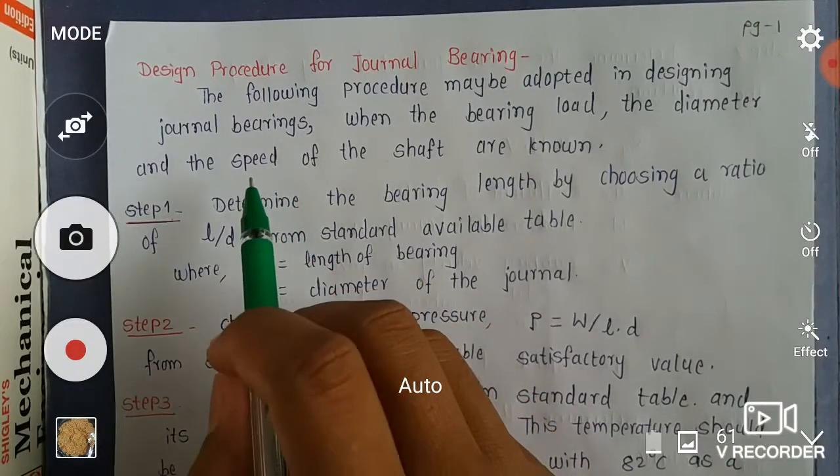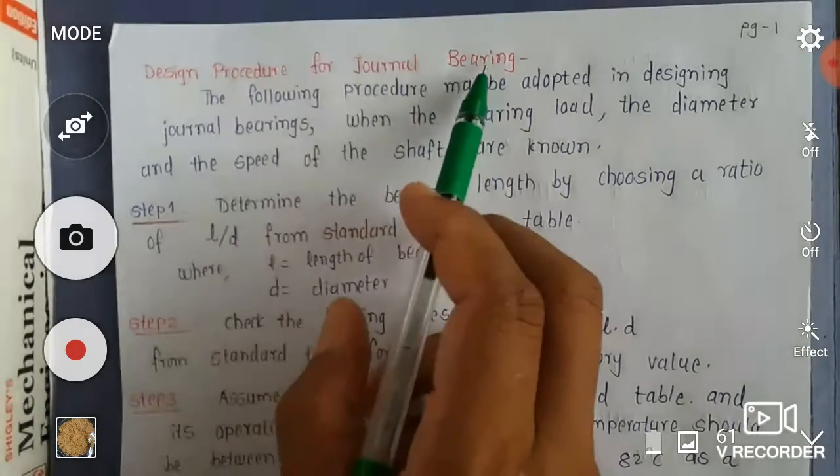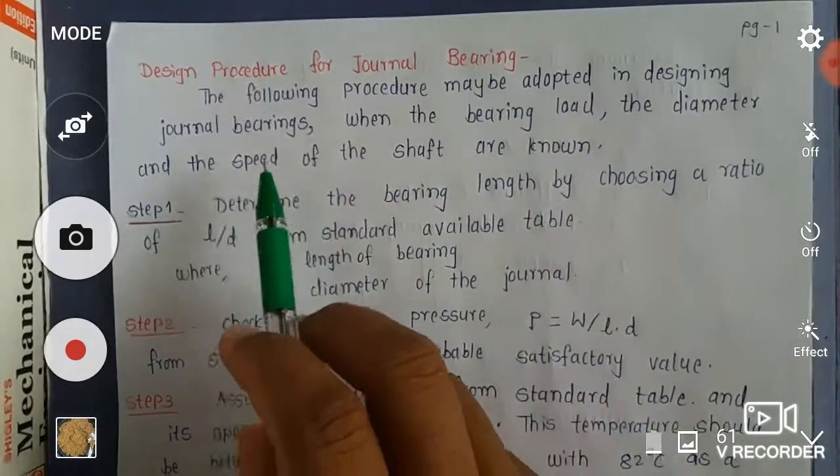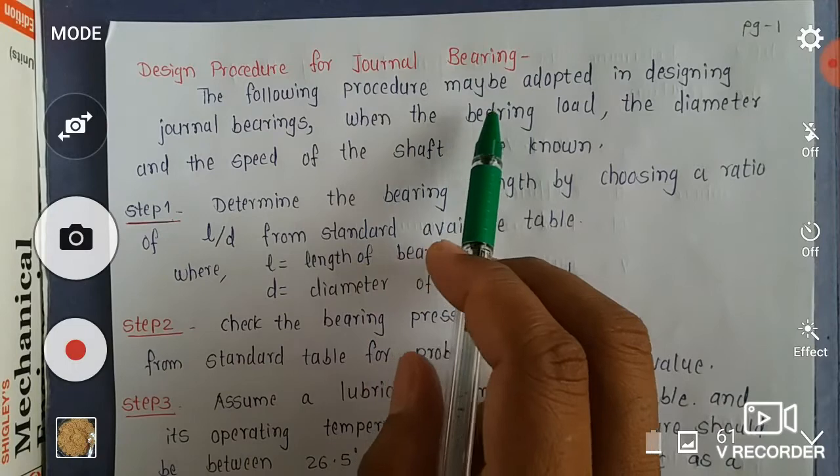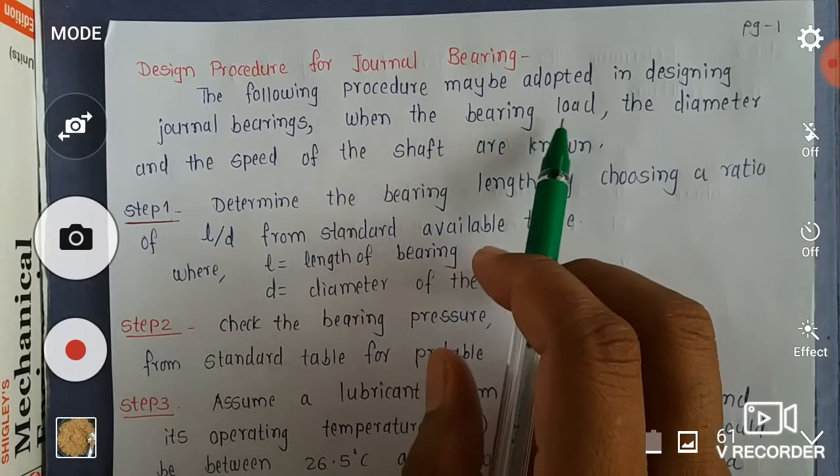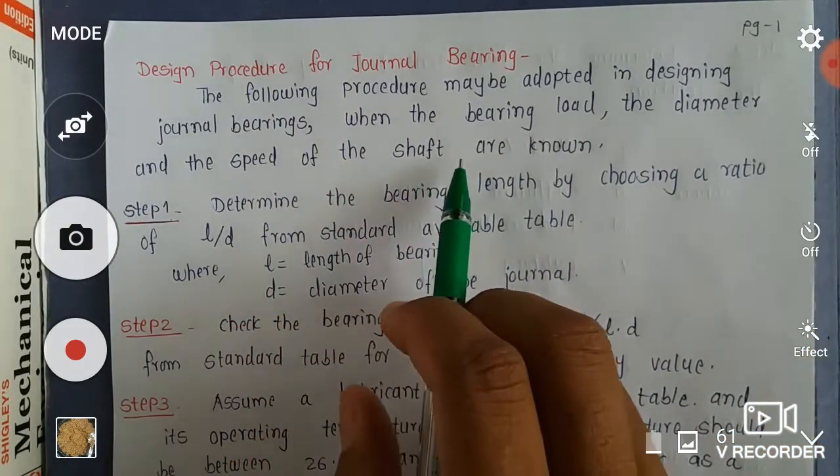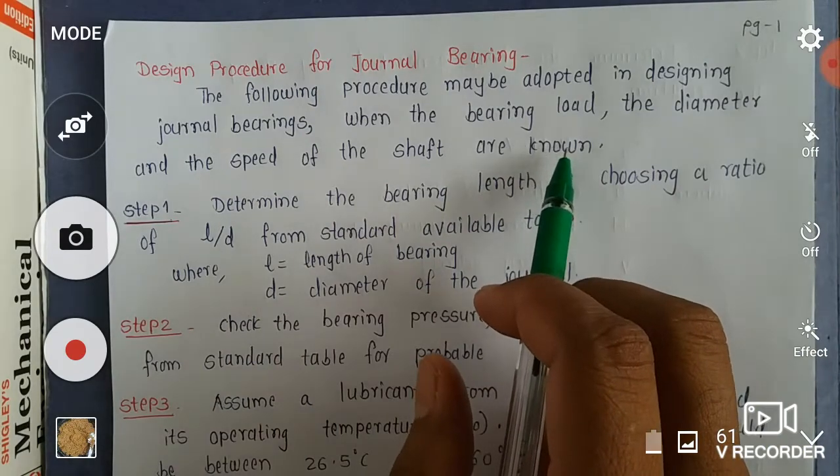Hello students, today we learn about the design procedure for journal bearing. The following procedure may be adopted in designing the journal bearings when the bearing load, the diameter, and the speed of the shaft are known.